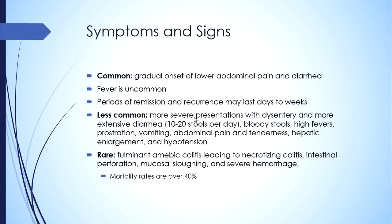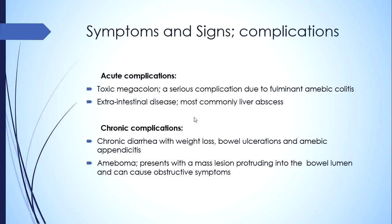Hepatic enlargement and hypotension indicate serious disease. Rarely, patients can present with the most serious form — fulminant amoebic colitis — a very rare condition that can lead to necrotizing colitis, intestinal perforation, mucosal sloughing, and severe hemorrhage. Although rare, this condition carries a mortality of about 40%. Certain acute and chronic complications can occur without proper treatment.